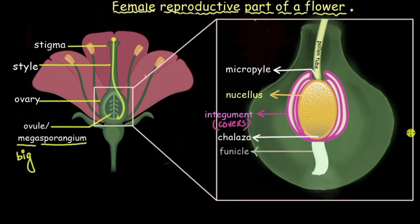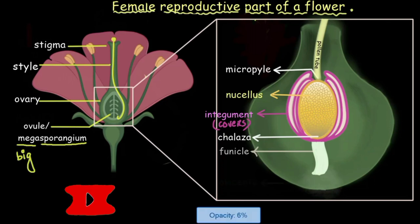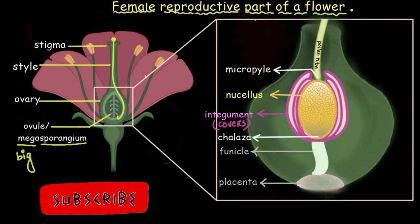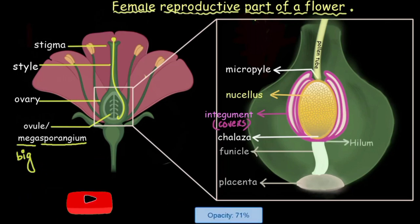And this funicle and the ovary meets at a region called placenta. And also the area where the funicle meets the integuments we call it the hilum.